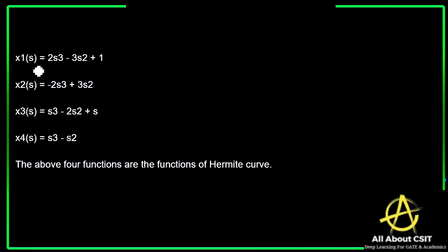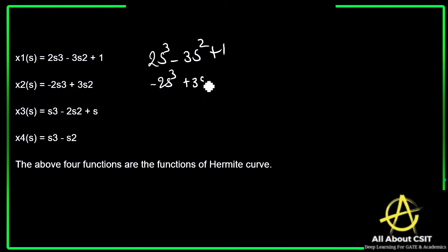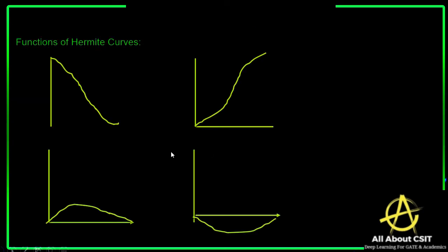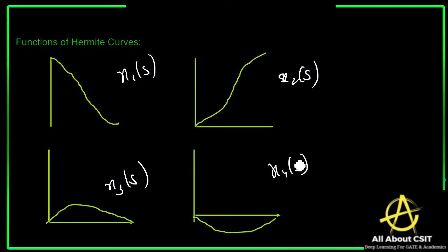These four are finally added. x1(s) is 2s³ − 3s² + 1, x2(s) is −2s³ + 3s², x3(s) is s³ − 2s² + s, and x4(s) is s³ − s². These four functions x1(s), x2(s), x3(s), x4(s) are the basis functions of the Hermite curve — they are polynomial equations.